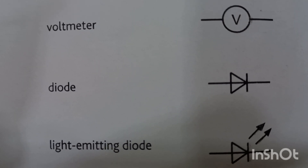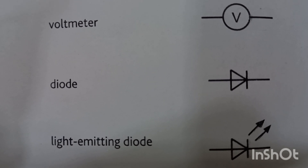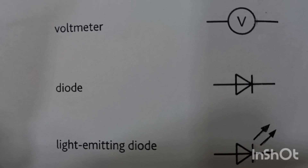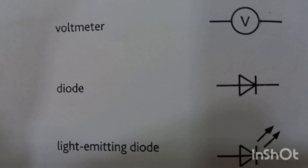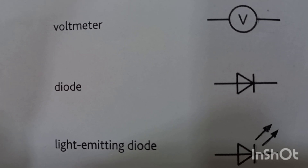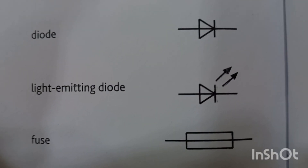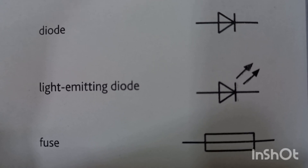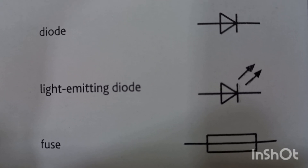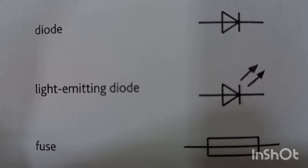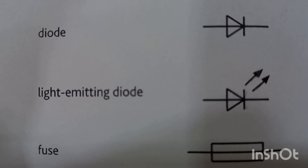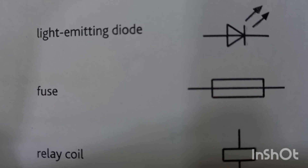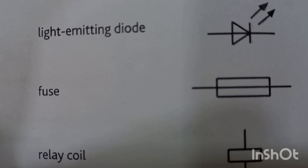This is the symbol for the diode. A diode is a semiconductor which only allows current to flow in one direction — if current tries to flow in the other direction, the diode shows very high resistance. This is the electric symbol for the light emitting diode (LED); when you provide electricity to it, it gives out light.